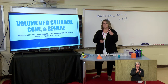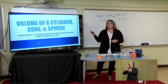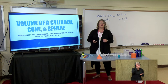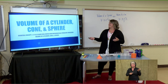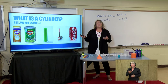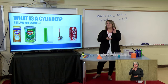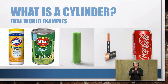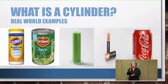This week we're going to be talking about the volume of a cylinder, a cone, and a sphere — that's essential concept number two. Today we're going to focus mainly on a cylinder and a cone. A cylinder — here are some examples. Maybe you've seen Clorox wipes, canned goods, a candle, a battery, or maybe you've had a soda today. These are all examples of cylinders.